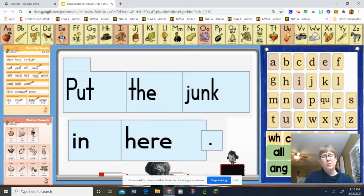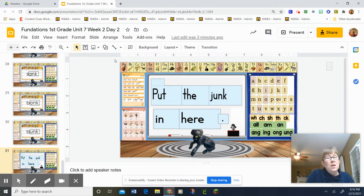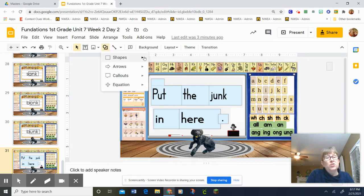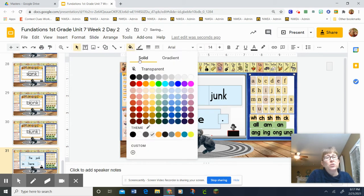And you know what? I forgot to mark my sentence, so I'm gonna do that right now. I should have circled my trick words, right? Put is our new trick word. So we're gonna circle that. Put is P-U-T, put.